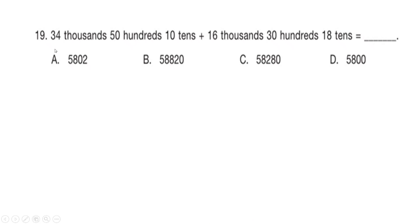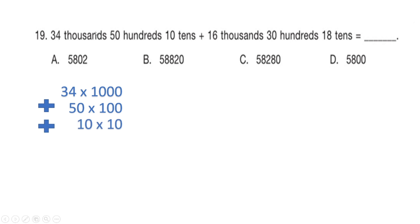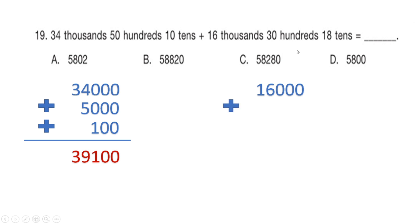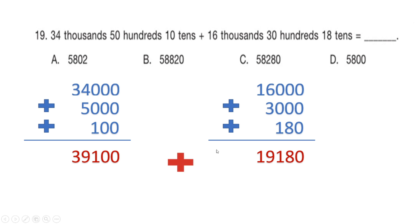We compute each part: 34×1000=34,000, 50×100=5,000, and 10×10=100, giving a total of 39,100. For the second number: 16×1000=16,000, 30×100=3,000, and 18×10=180, giving 19,180. Adding them: 39,100+19,180=58,280, which is option C, our right answer.